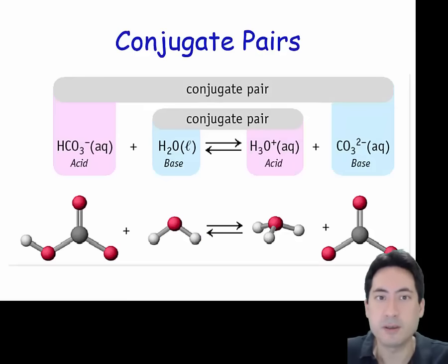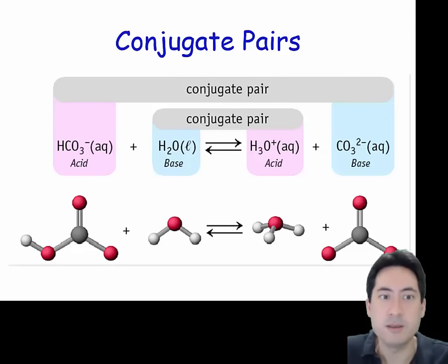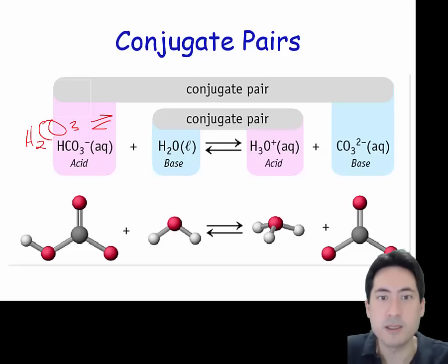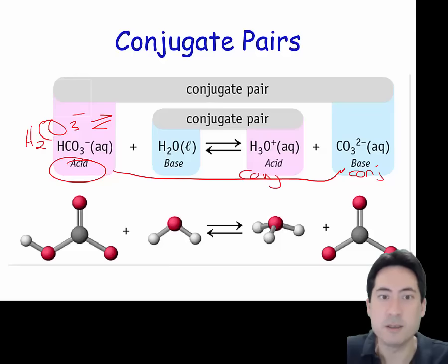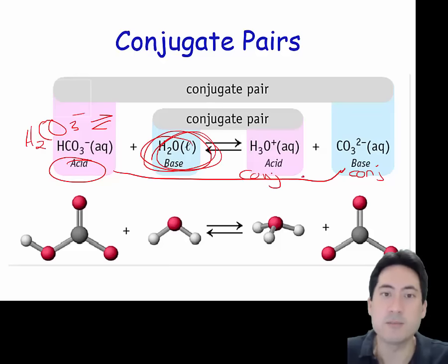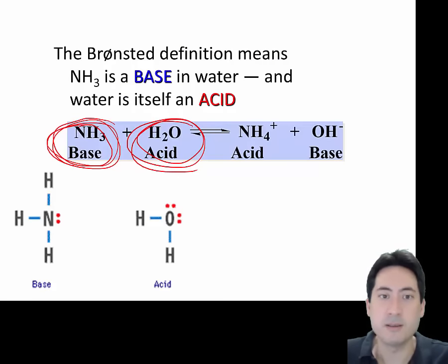Here is an example of a conjugate pair with a carbonate ion and hydrocarbonic acid. This is monoprotic in this case, but you also have diprotic going on before that. This is the acid and its conjugate base, and that is the base and the conjugate acid. In this case, the water is actually acting as a base, whereas in the previous example the water was acting as an acid.